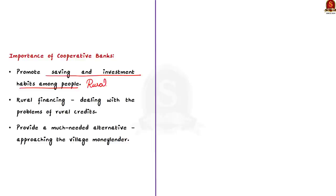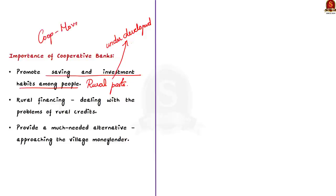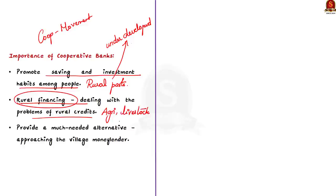The major funding areas of cooperative banks include agriculture, livestock, milk, personal finance, self-employment, and setting up of small-scale units — among the focus points for both urban and rural cooperative banks. Keep in mind that majority of India's population are living in rural areas. The cooperative banks situated in rural parts of India help in the development of these areas, providing a much-needed alternative to the age-old exploitative practice of approaching the village moneylender for finances, where people often fall into a debt trap.